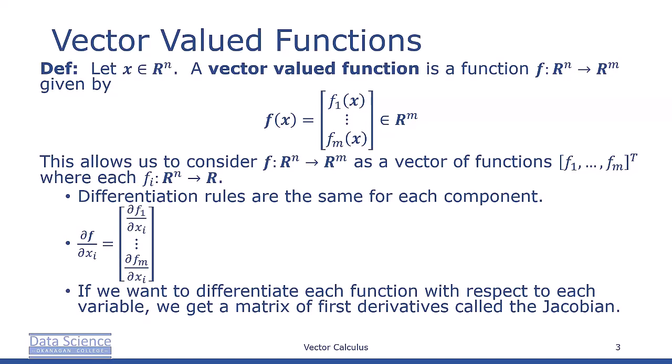Suppose x is an n-dimensional vector. A vector-valued function is a function f that takes n-dimensional vectors and maps them to R^m. It's given by f of x equals the column f1 of x, f2 of x, all the way down to fm of x. Again, that's a real column vector with m rows.